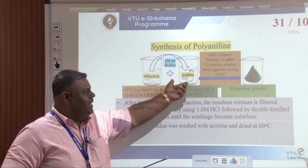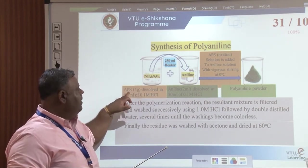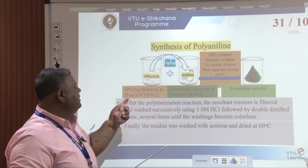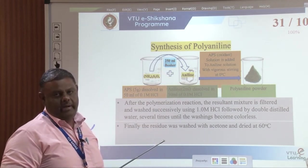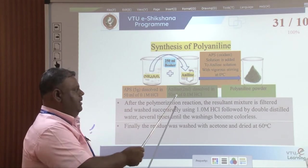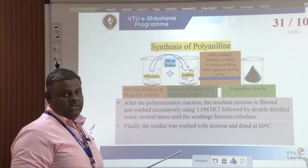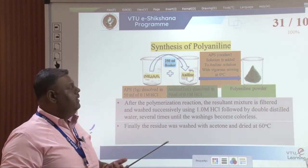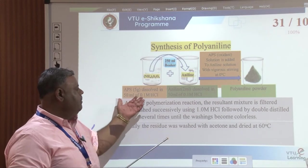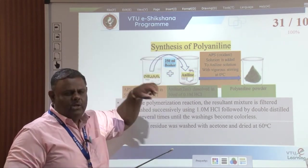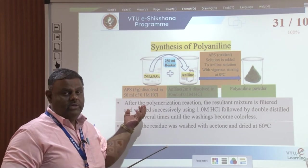For synthesis of polyaniline, take two 250 ml beakers, each with 50 ml of 0.1 molar HCl. Add 0.5 g of ammonium persulfate — an oxidant — to one beaker and stir. In the other beaker, take about 2 ml of aniline as monomer dissolved in acid and stir properly. Transfer the ammonium persulfate solution to the aniline solution slowly, at 0°C.